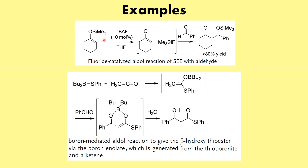Looking at examples: the first uses TBAF — tetrabutylammonium fluoride — which is used to cleave the silyl ether because fluoride has a very good affinity for silicon. The resulting alkoxide (O⁻), as soon as it forms, attacks the aldehyde to give the aldol product. This is also called the fluoride-catalyzed aldol condensation.